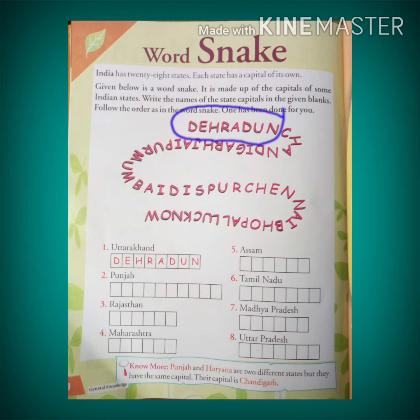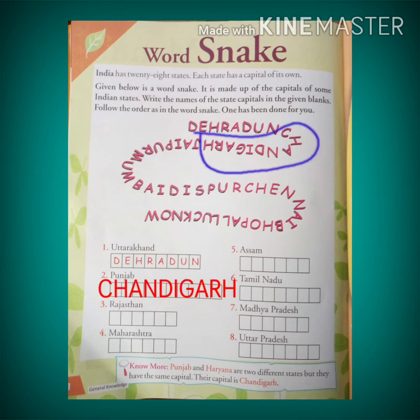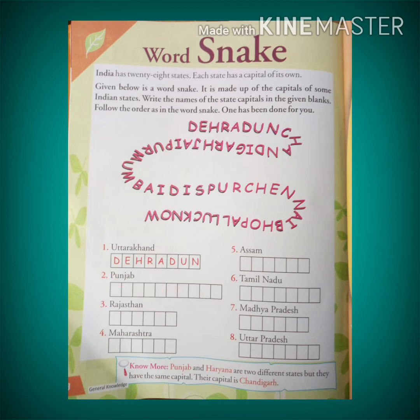Next one is Punjab. Let us find out from the word snake — the capital of Punjab is Chandigarh. Third one is Rajasthan — the capital of Rajasthan, found in the word snake, is Jaipur.